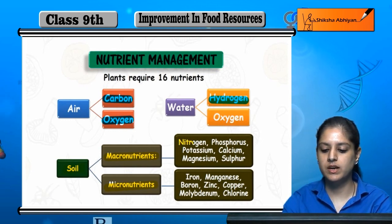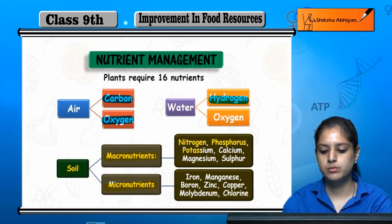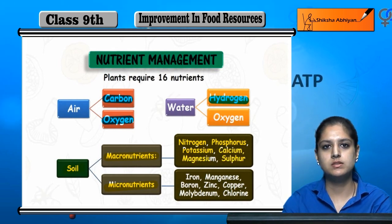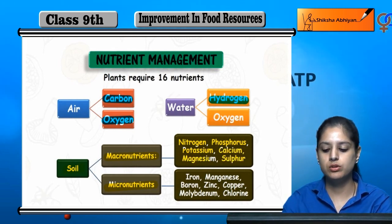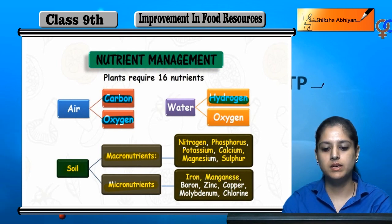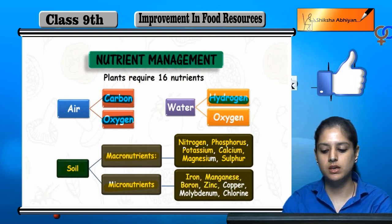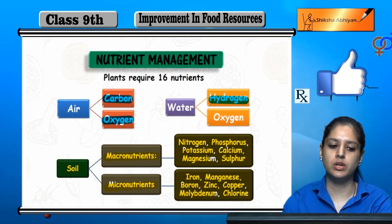Macronutrients are: nitrogen, phosphorus, potassium, calcium, magnesium, and sulfur. Micronutrients are: iron, manganese, boron, zinc, copper, molybdenum, and chlorine.